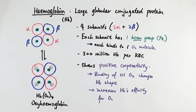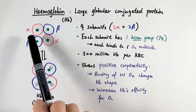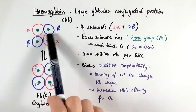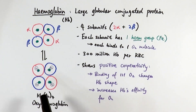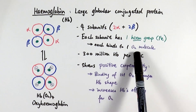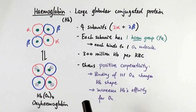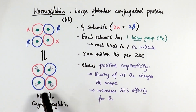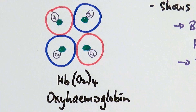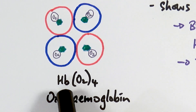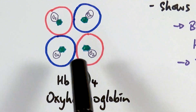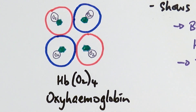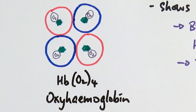Haemoglobin is made up of four subunits in terms of its quaternary structure — two alpha subunits and two beta subunits. Each subunit has one single heme group and can bind to one oxygen molecule, so each haemoglobin can bind to a maximum of four oxygen molecules. When haemoglobin is bound to oxygen we call it oxyhaemoglobin, represented as Hb(O₂)₄. The oxygen binds specifically to the heme group, not to other parts of the haemoglobin.